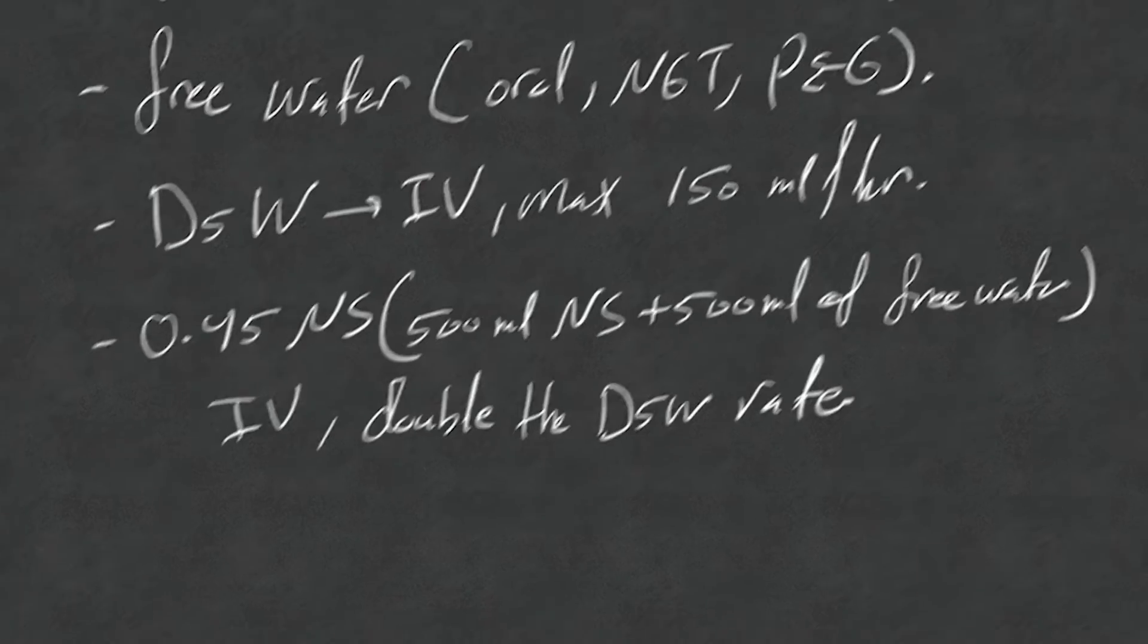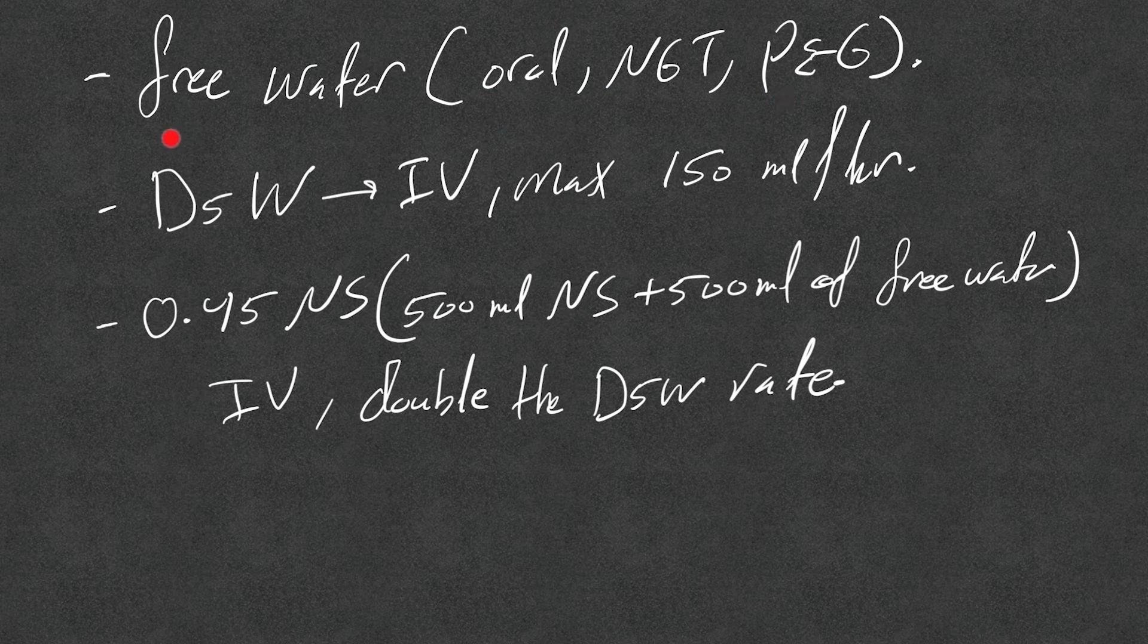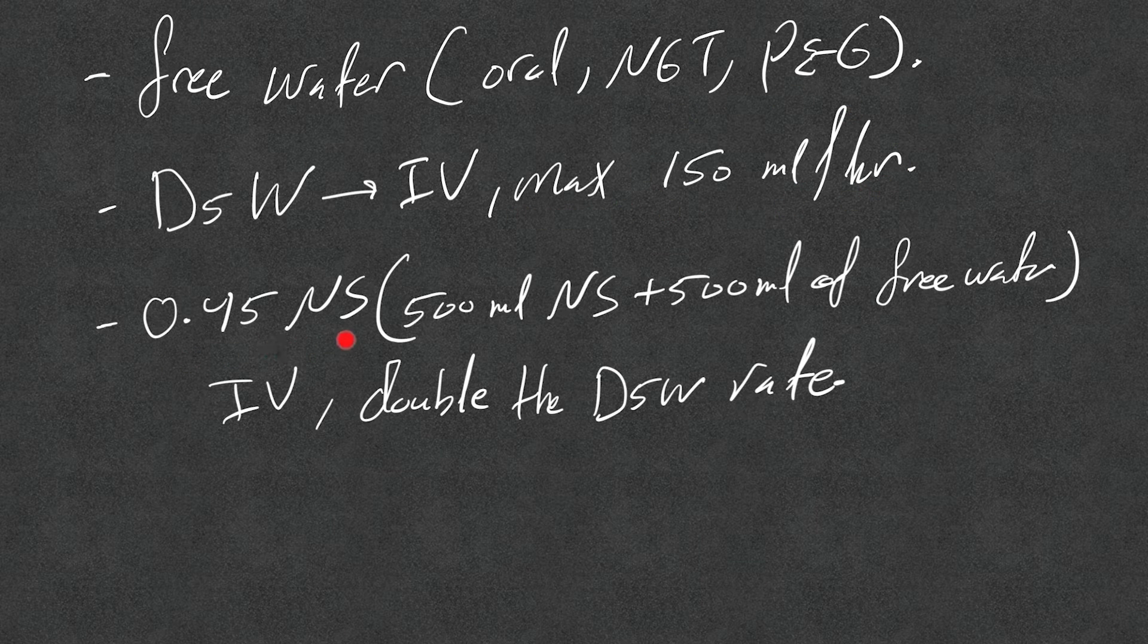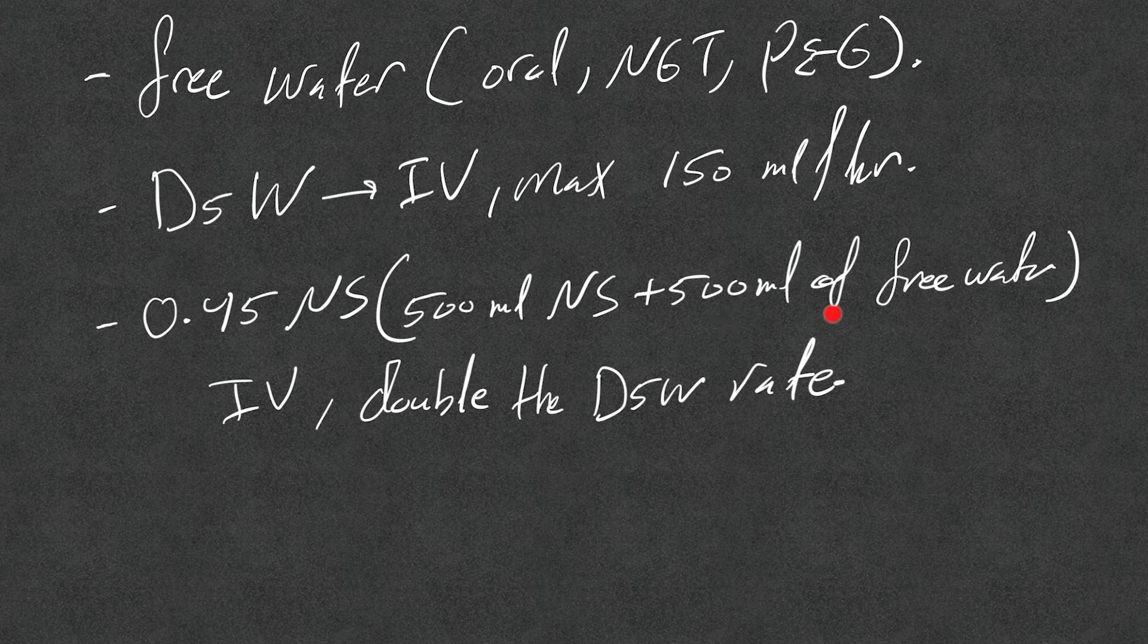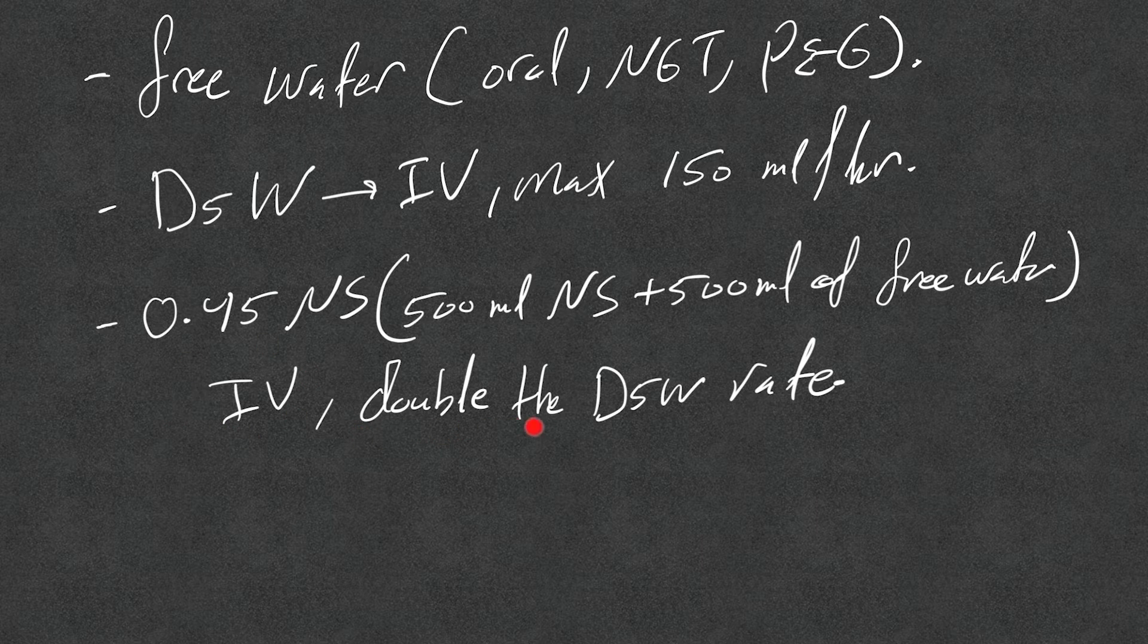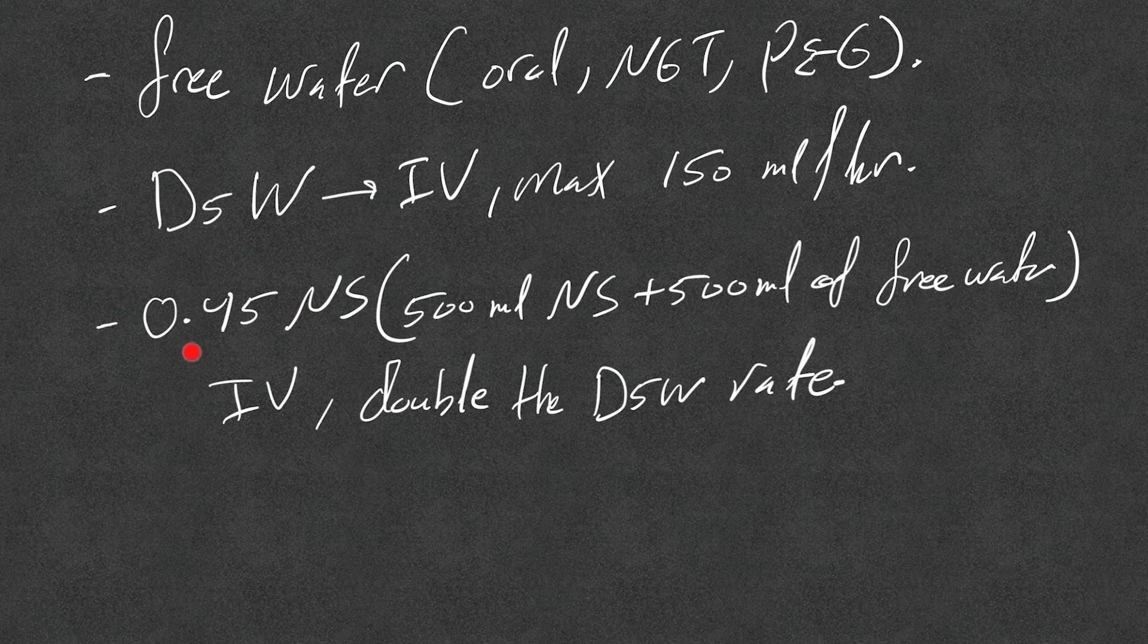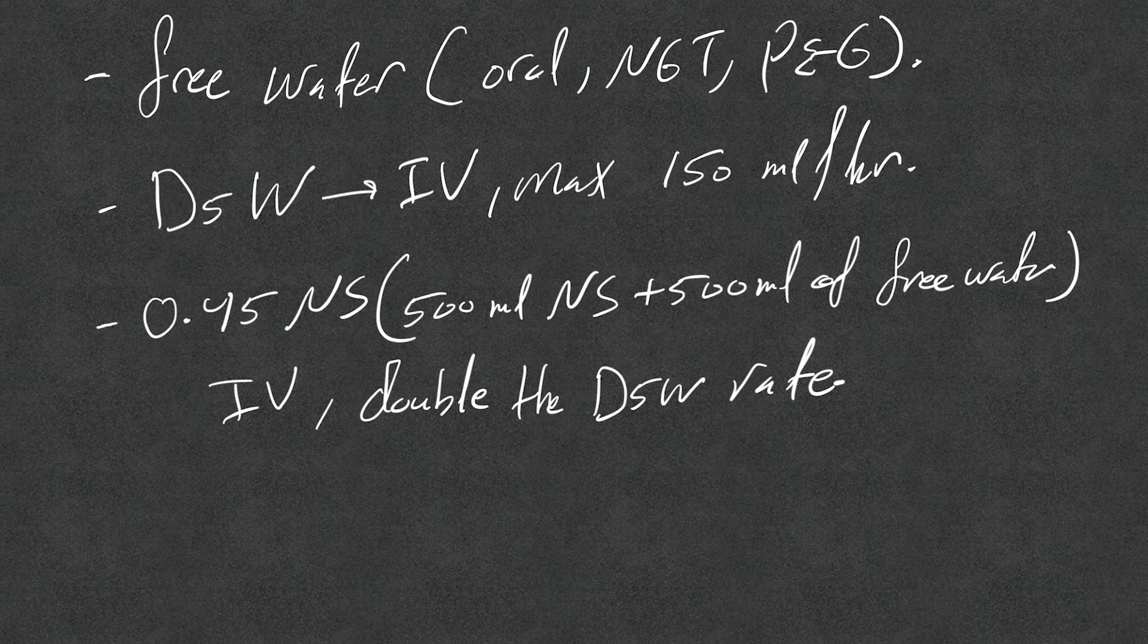What kind of water we give? We need this is all water replacement, right? Either we give free water orally or NG tube or PEG tube, and this is my favorite and the best and most effective to me treatment. Or D5W, give it IV, and remember maximum is 150 ml per hour. Or half normal saline: 1000 cc of half normal saline is basically 500 ml of normal saline mixed with 500 ml of free water. That will give you 1000 cc of half normal saline. So we give IV, and usually give double the D5W rate because a bag of 1000 cc of D5W will give you 1000 cc of free water, and 1000 cc of 0.45 or half normal saline will give you 500 ml of free water. So 50 percent of the bag is free water only, so you need to double the rate of the D5W.